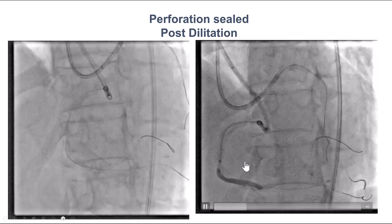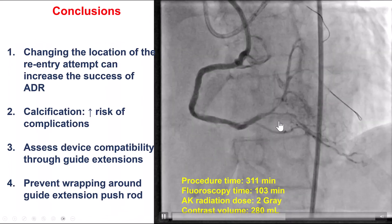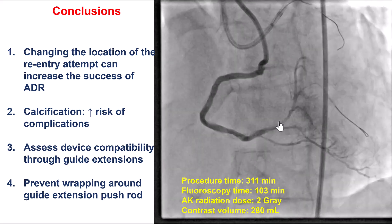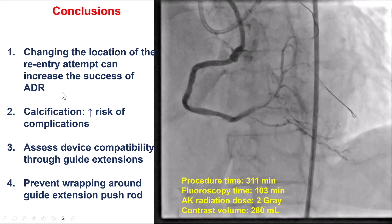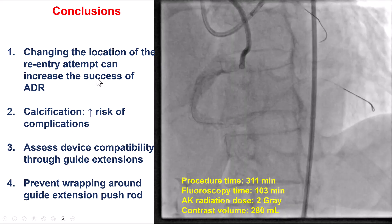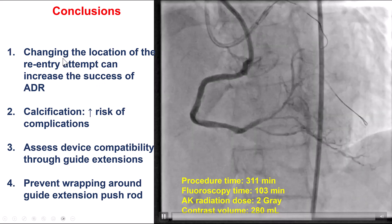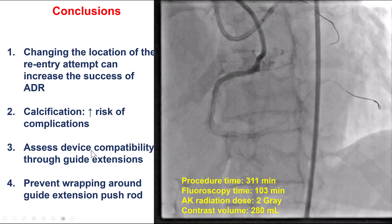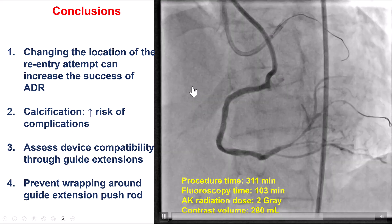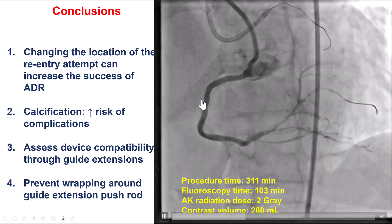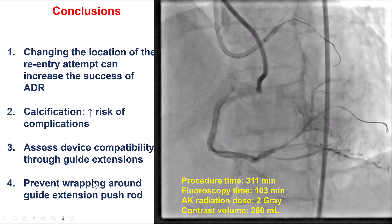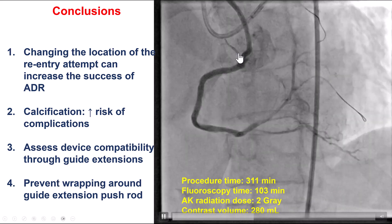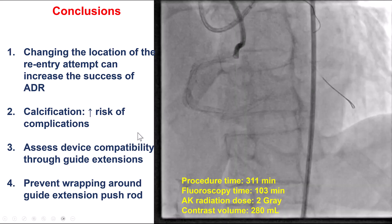Multiple lessons from this case. First, the difficulties of CTO-PCI are augmented in a patient with heavy calcium — specifically for reentry, we had to try different locations and eventually reentered using a Hornet 14 guide wire. Second, the risk of complications goes up significantly with heavy calcium. Third, it is important to know the compatibilities of various equipment through the guide extension: up to a 3.0 ringer balloon can go through the 6 French GuideLiner, but for the 3.5, a 7 French GuideLiner is needed. Finally, another cause of difficult delivery is guide wire wrap around the push rod of the guide extension, and that is why using a towel on the side of the guide extension can be important to prevent this from happening.